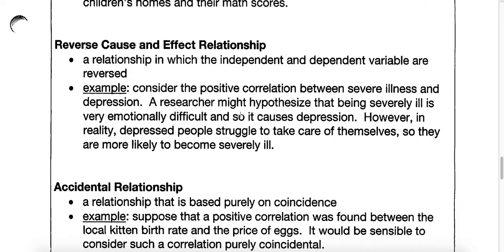And then there's a reverse cause and effect relationship — when we make a cause and effect situation but actually have it backwards. It's a relationship in which the independent and dependent variables are reversed. For example, consider the positive correlation between severe illness and depression. We might hypothesize that being severely ill causes depression. However, what is really happening is that depressed people struggle to take care of themselves, so the depression might actually cause someone to become severely ill. Sometimes we come up with this relationship and have it completely backwards.